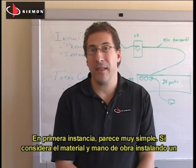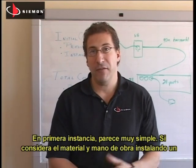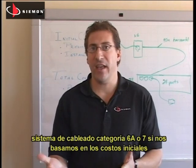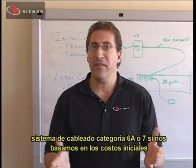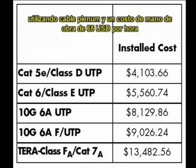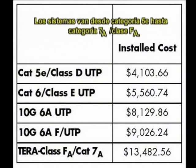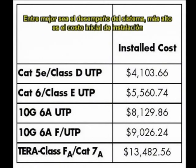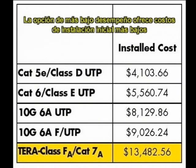On the surface it seems pretty simple. If you factor in materials and labor, if you install a lower performing cabling system such as Category 5E, it's going to be less expensive than installing a Category 6A or Category 7 cabling system based on initial cost. The following analysis compares the initial installed cost for a 24 channel cabling system using plenum rated cable and a labor rate of $65 per hour. Systems range from Category 5E through Category 7A, also known as Class FA. Initial installation costs include the cost of the components, installation labor and testing. As you can see, the better performing the cabling system, the higher the installation cost. The lowest performing cabling option offers the lowest initial installation cost.